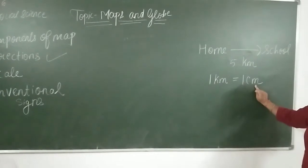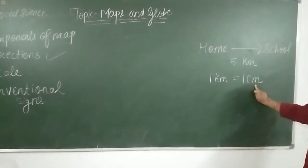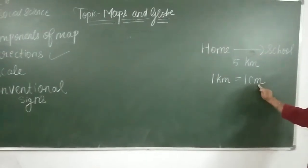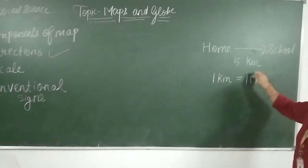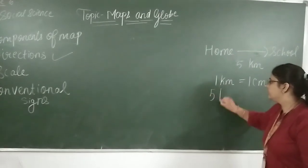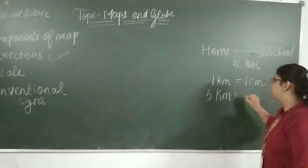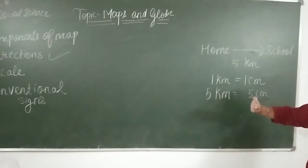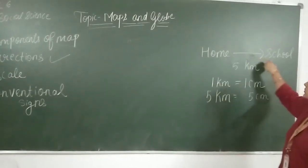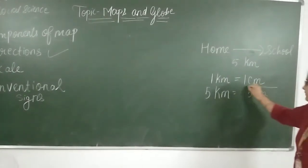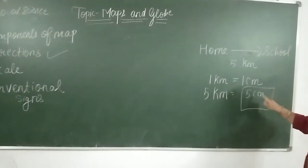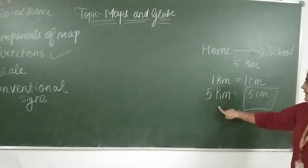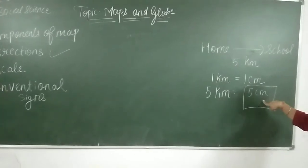Because cm is a smaller unit, we can denote distances in a map for proper information. So the distance between your home and school will be denoted as 5 cm on the map, because cm is a smaller unit and kilometre is a larger unit. Therefore, we denote the distance using the smaller unit, cm.